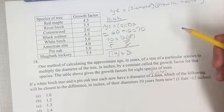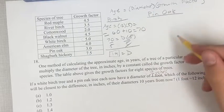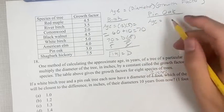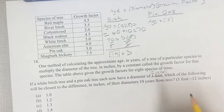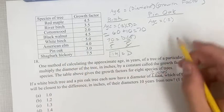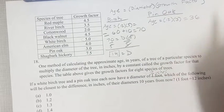And we have to do that again for the pin oak. Similar thing, we know the age is equal to the diameter, which again is 12 inches for both of them, times its growth factor, which is different. For a pin oak it's 3.0 or just 3. So the age is 12 times 3 or 36.